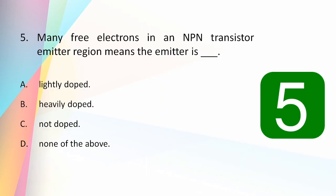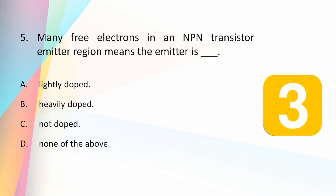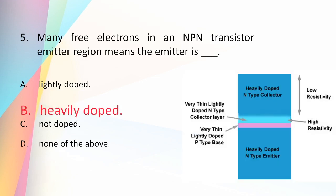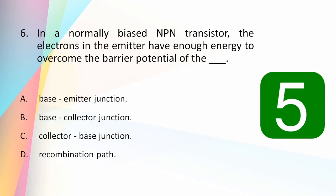Many free electrons in an NPN transistor emitter region means that the emitter is: lightly doped, heavily doped, not doped, or none of the above? The answer is heavily doped — many free electrons means heavy doping. In a normally biased NPN transistor, the electrons in the emitter have enough energy to overcome the barrier potential of the base-emitter junction.